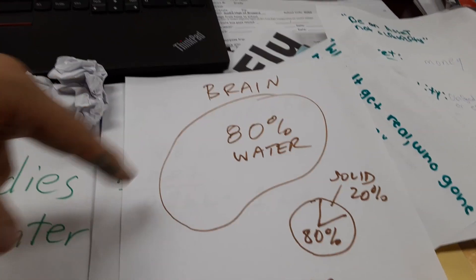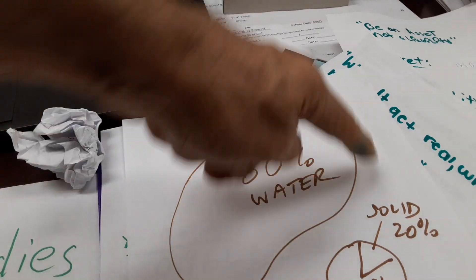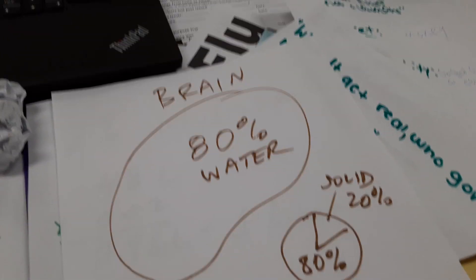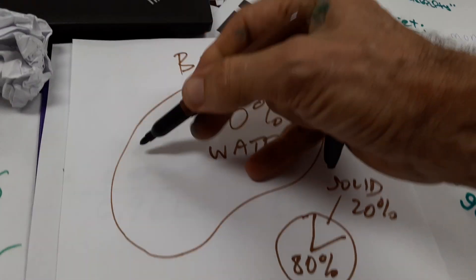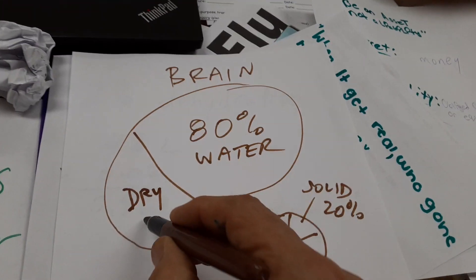I wish they had a diagram like this in this book. 80 percent of the brain is water. So I got a little 80 percent there. Then down here is what's dry. That's 20 percent.